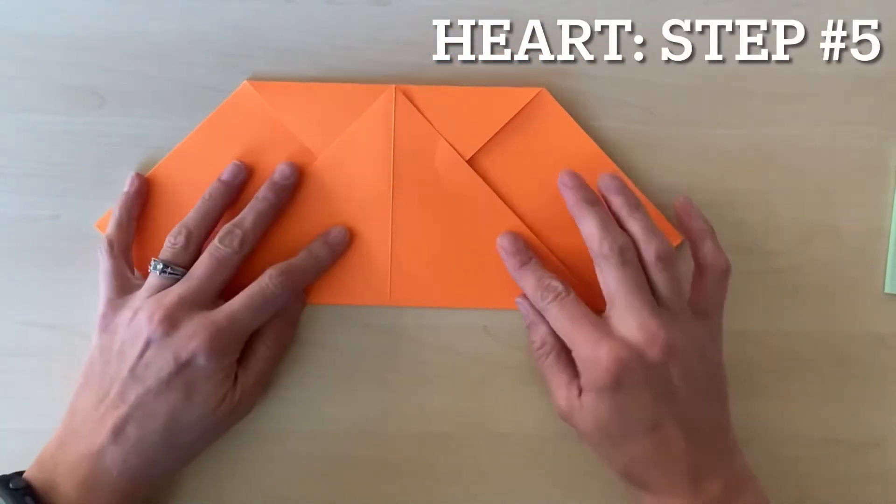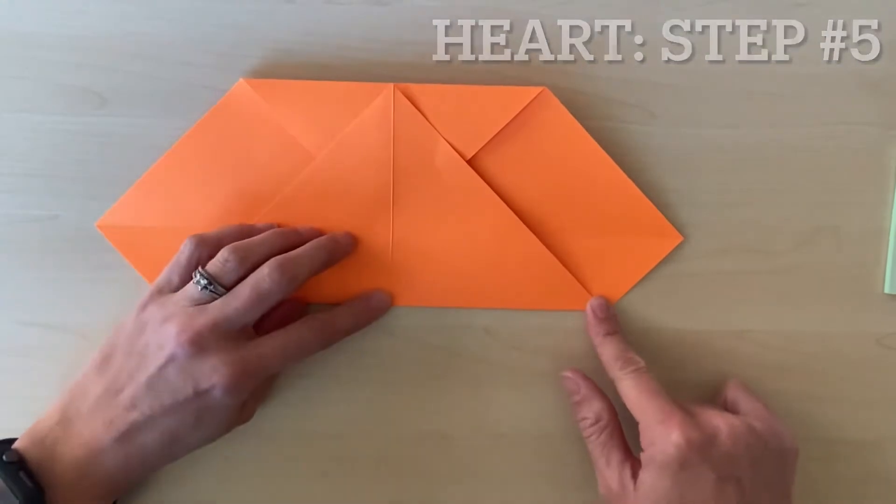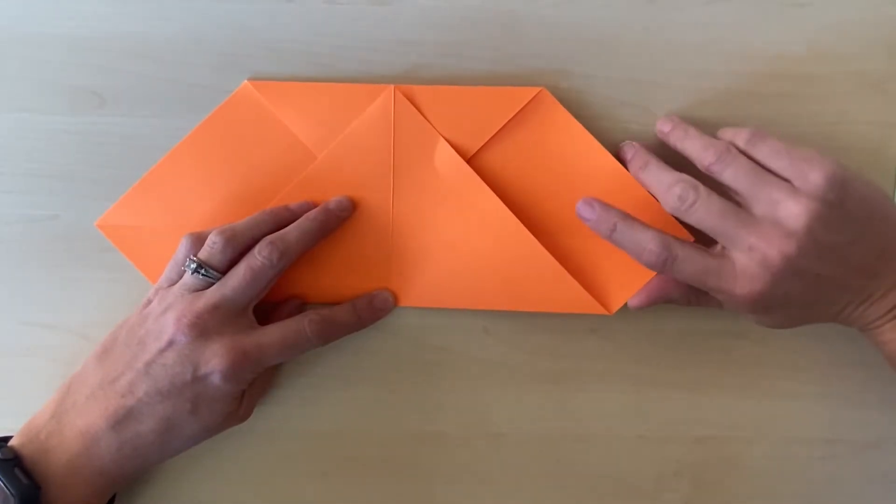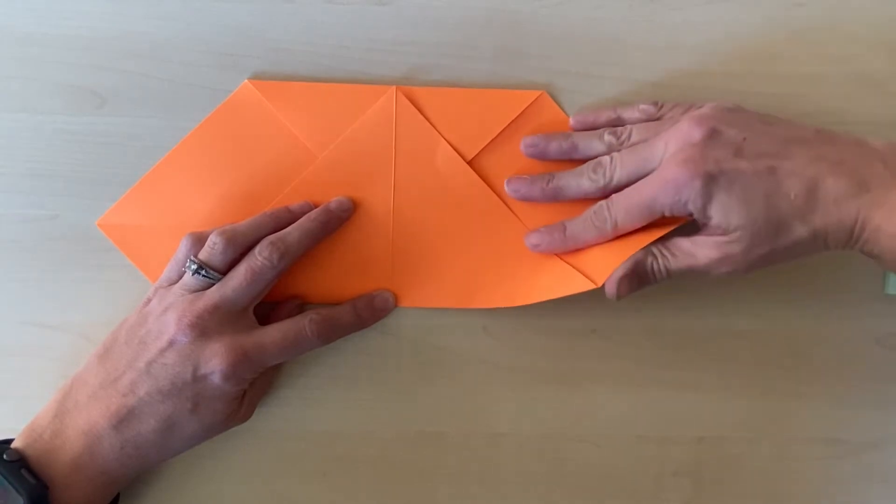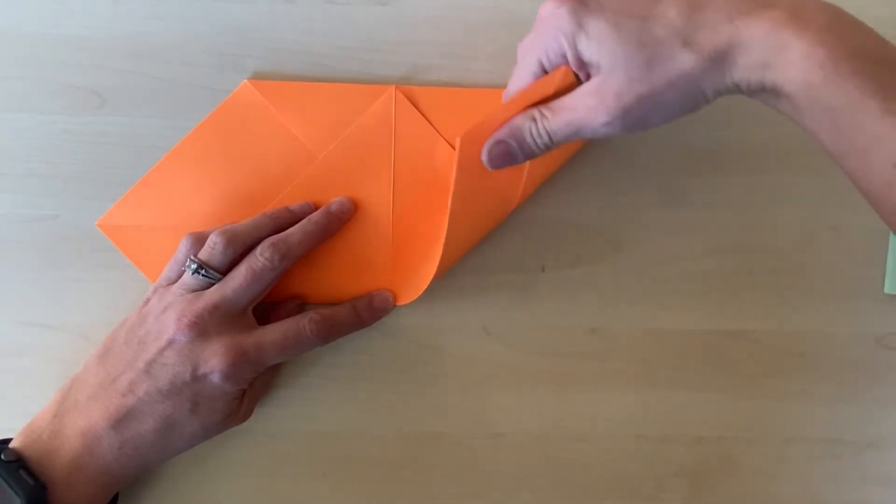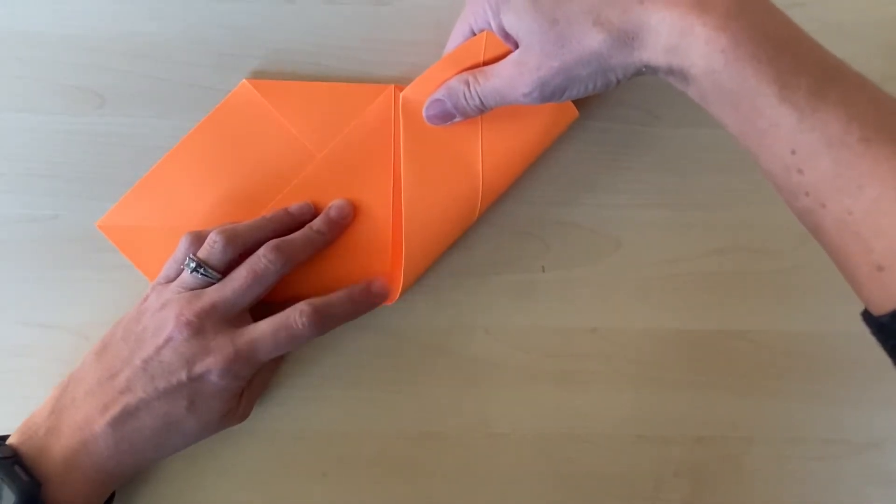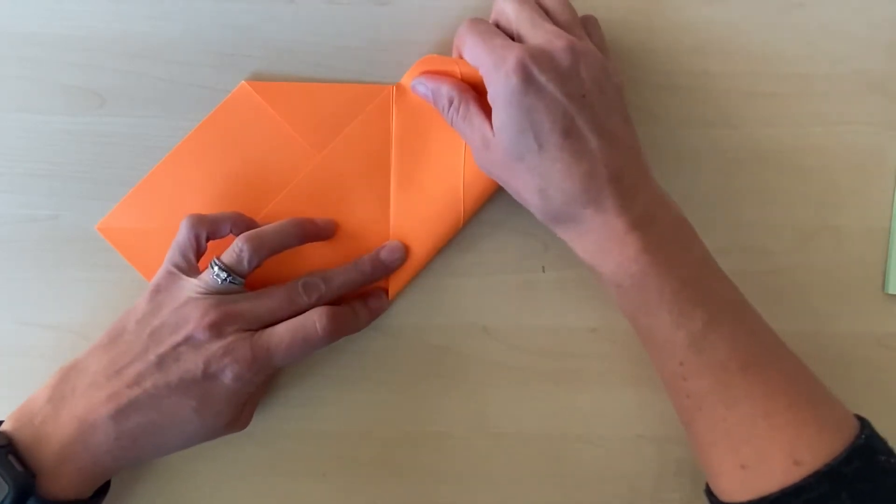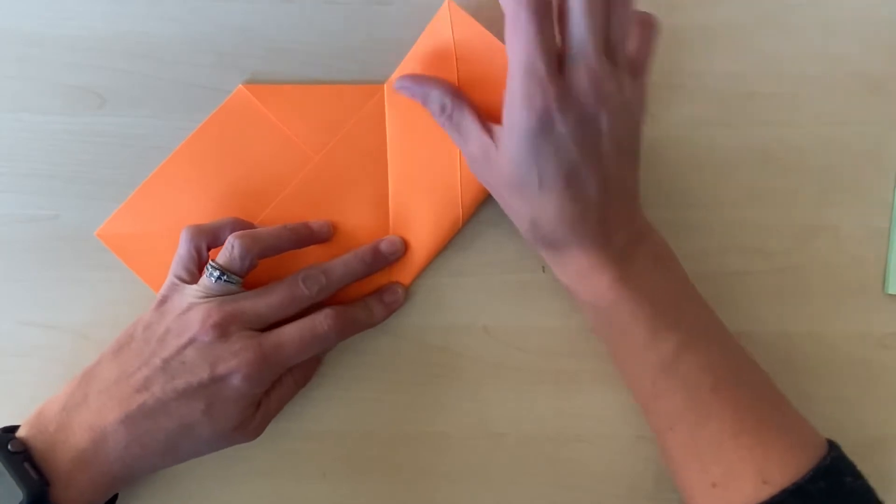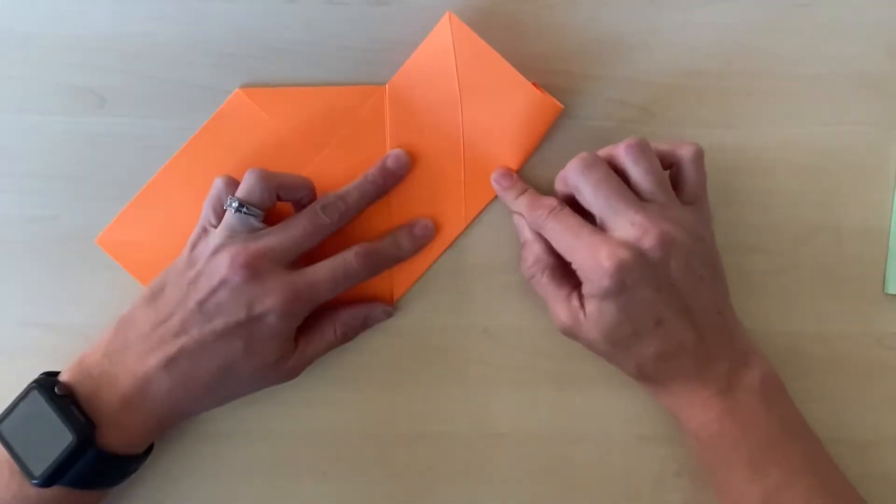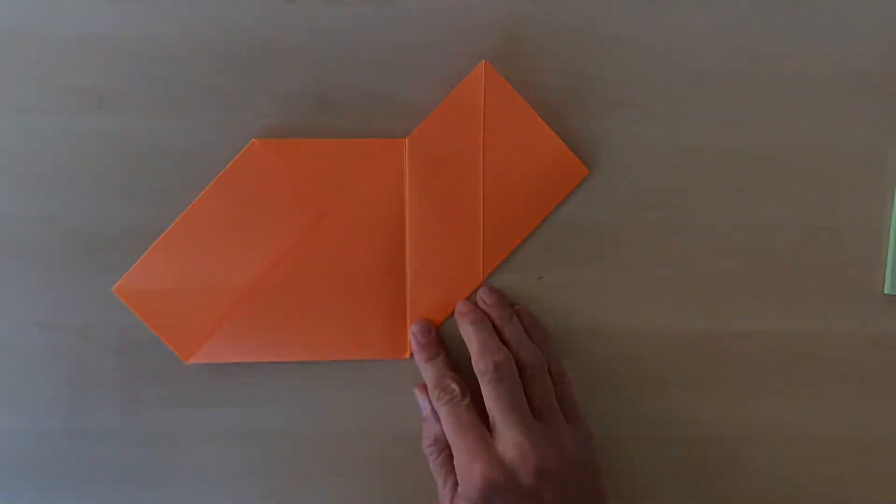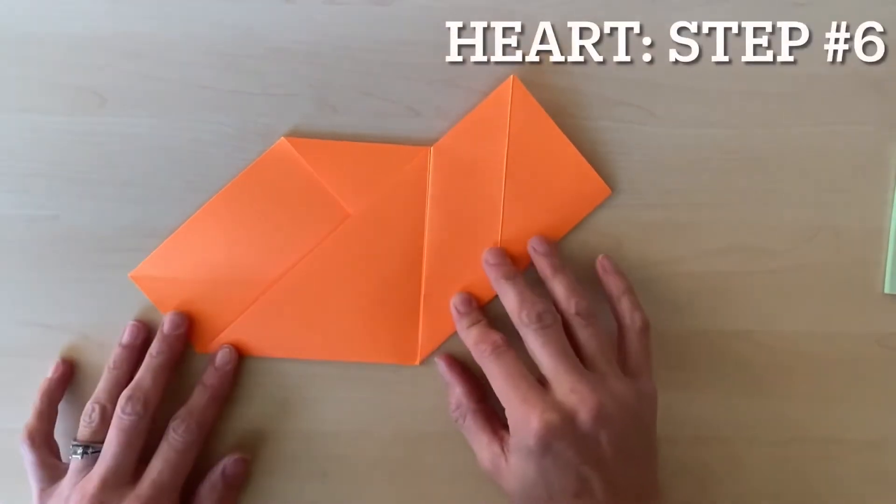Now I'm going to fold half of the bottom edge to the middle, making a diagonal shape. I'm going to use my thumb to fold, using my finger here on the center crease to keep its place, and I'm going to hold it down and press the crease.